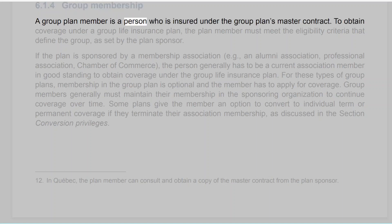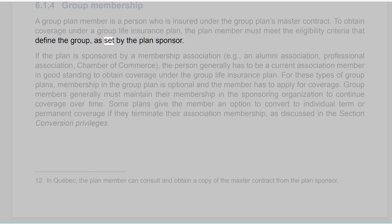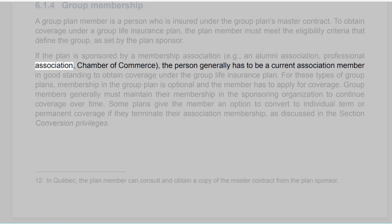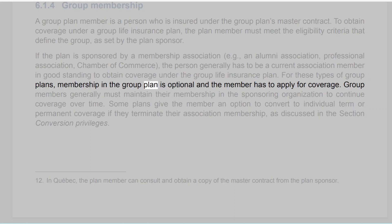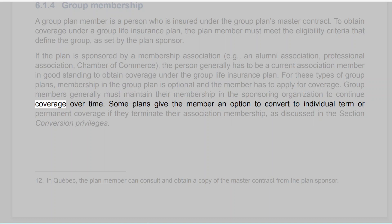A group plan member is a person who is insured under the group plan's master contract. To obtain coverage, the plan member must meet the eligibility criteria that define the group, as set by the plan sponsor. If the plan is sponsored by a membership association — such as an alumni association, professional association, or chamber of commerce — the person generally has to be a current member in good standing. Membership in the group plan is optional and the member has to apply for coverage. Group members generally must maintain their membership in the sponsoring organization to continue coverage over time. Some plans give the member an option to convert to individual term or permanent coverage if they terminate their association membership.